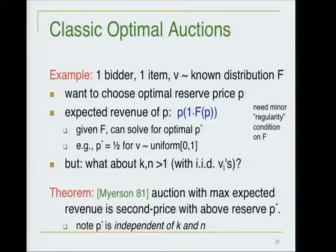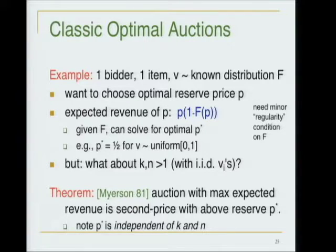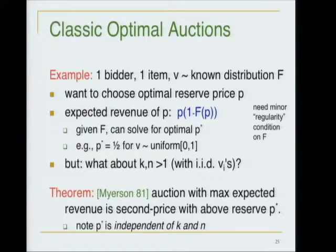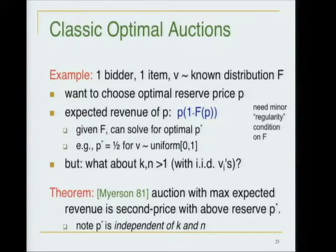So: worst-case competitive analysis is useless in a formal sense, and if we have a prior the problem was solved 30 years ago by Myerson. The question is: can we get the best of both worlds — an interpolation between these two models that gives robustness without requiring knowledge of a prior distribution, and works simultaneously for many distributions?